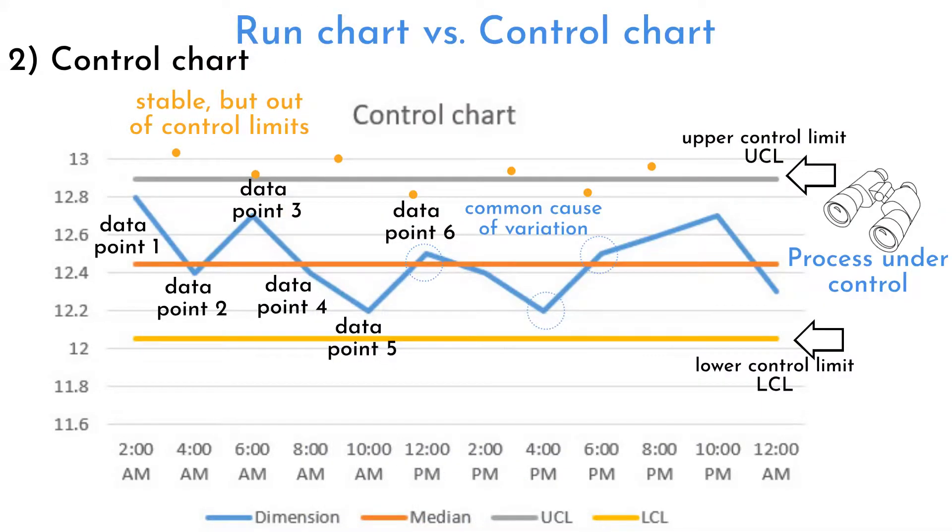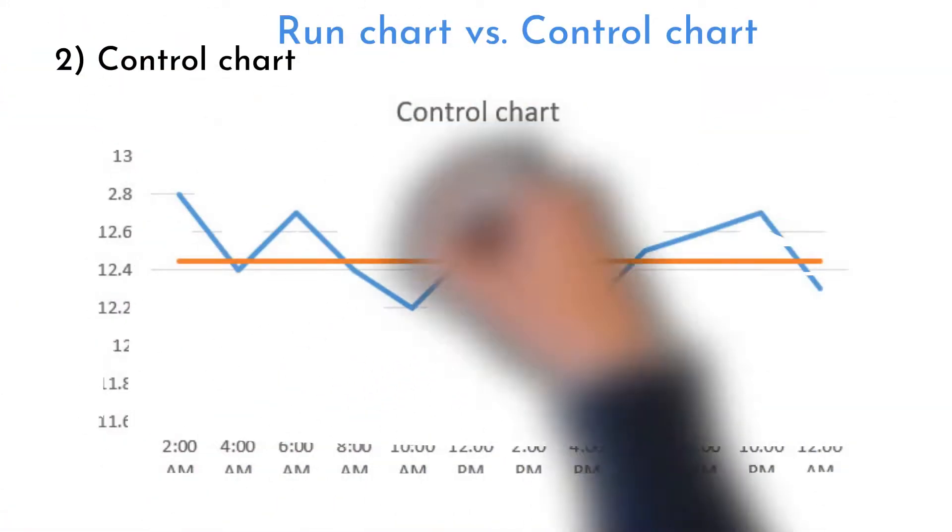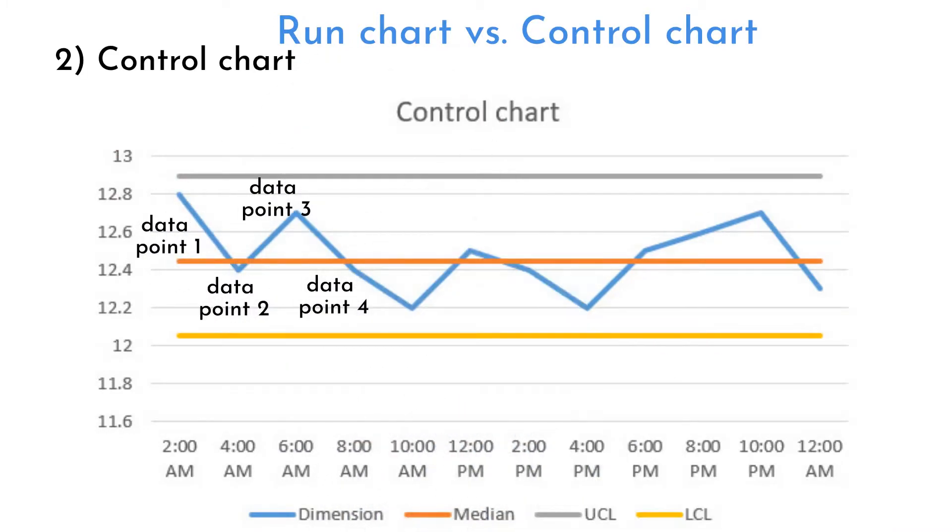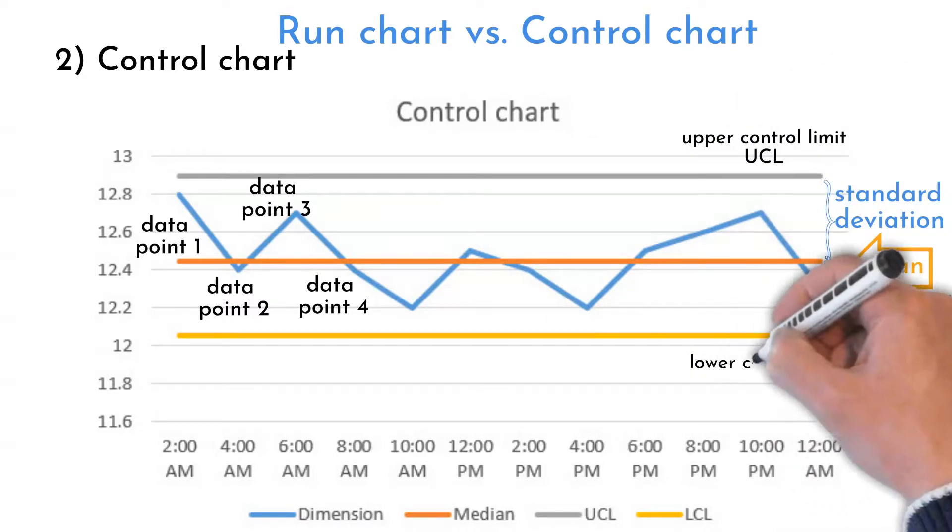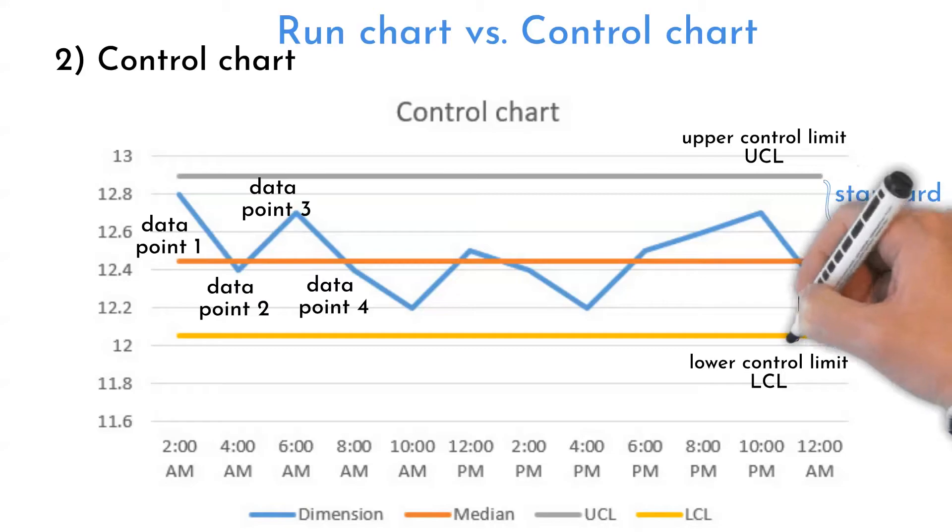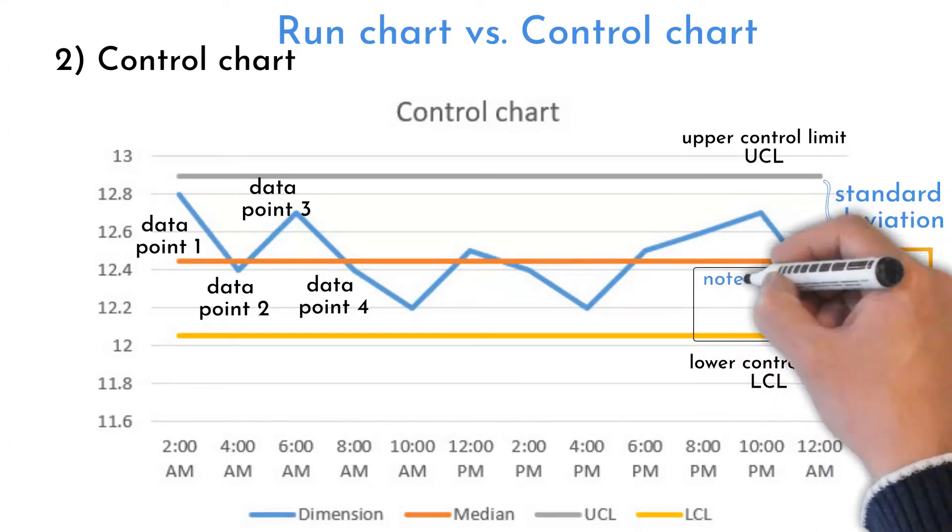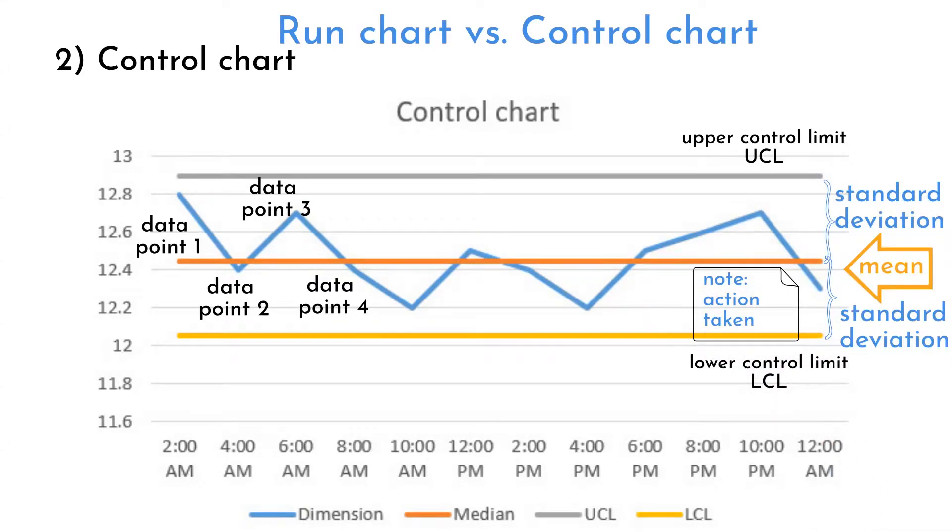Control chart consists of collected data points, mean of collected points which is the center line, standard deviation, upper and lower control limits. There can be other features like warning control limits, personal notes, action taken notes and so on.